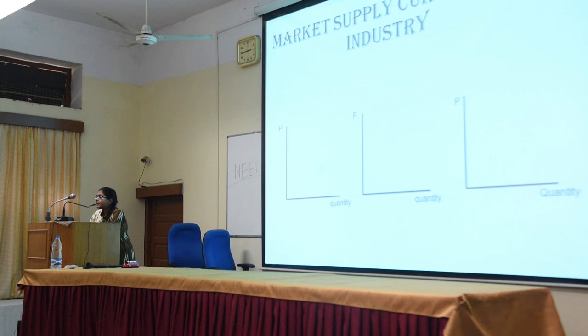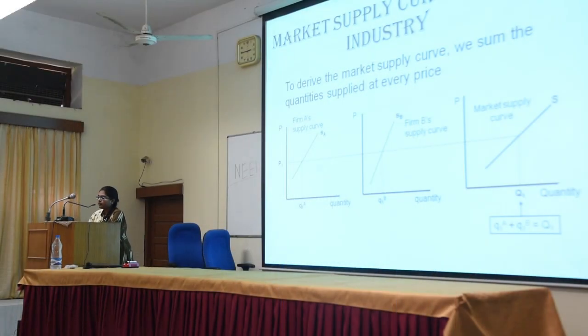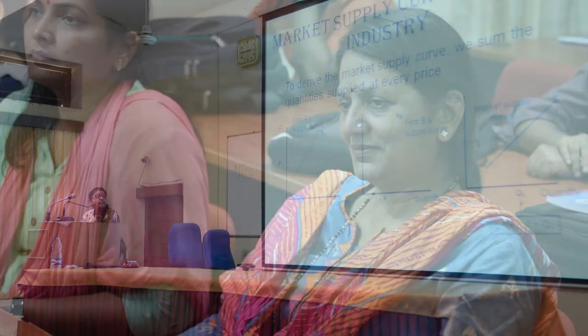Next, what is supply? Supply is the quantity of a product that a seller is willing and able to supply at a given price in a given period of time. Similar to the market demand curve, the market supply curve is the horizontal summation of individual supply curves. The difference between demand and supply curves is that demand has an inverse relationship with price — as price goes up, demand decreases — while supply has a positive relationship with price, meaning the higher the price, the higher the supply.